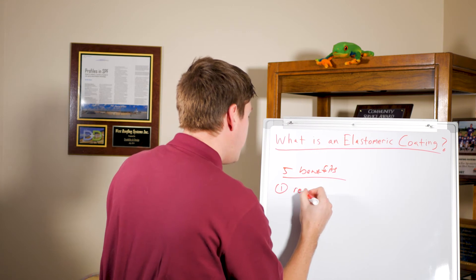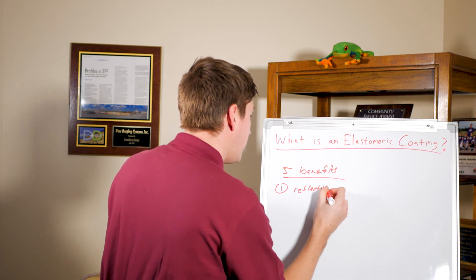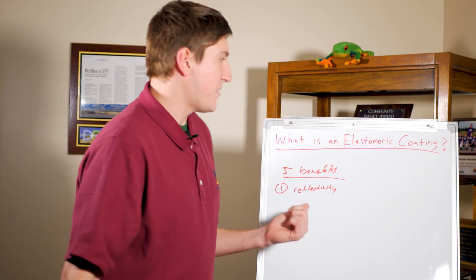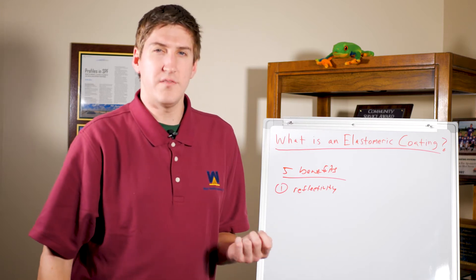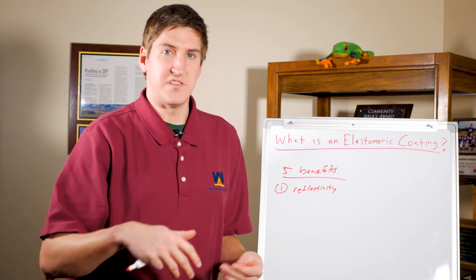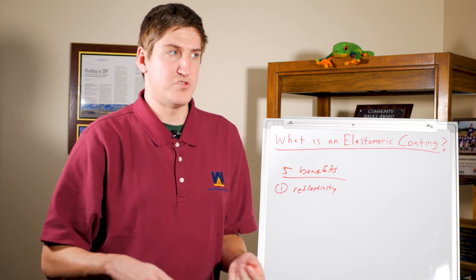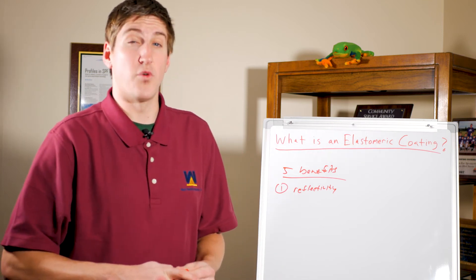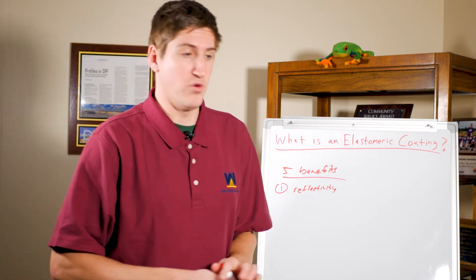First one is reflectivity. So elastomeric coatings, the majority of them are white, and when you put this over a black roof, your roof isn't getting as hot as it was before, which means your HVAC unit doesn't have to work as hard trying to keep your building cool.